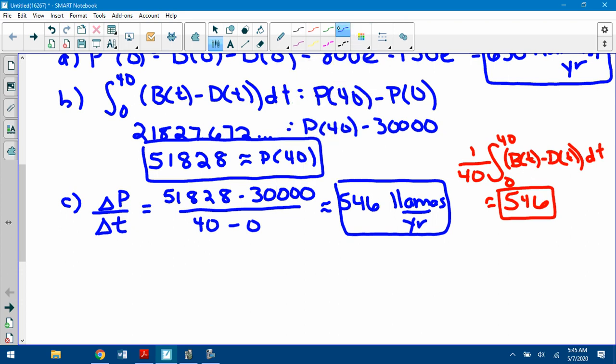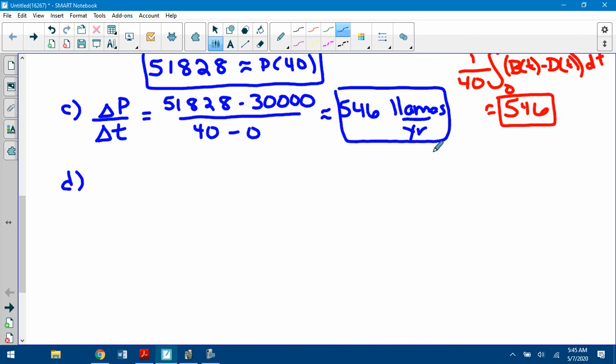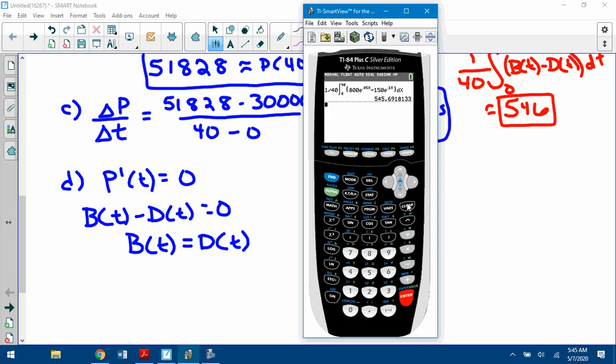Alright, last one. They want the absolute maximum and the absolute minimum. Of what? The absolute maximum minimum of the llama population. So population was P(t). If I want to find the absolute max or min, we take P prime and we set it equal to 0. Well, again, P prime is just B(t) minus D(t) equals 0. So I'm finding where does B(t) equal D(t). Where does the birth rate equal the death rate? This is me finding where the slope equals 0. It's finding critical values.